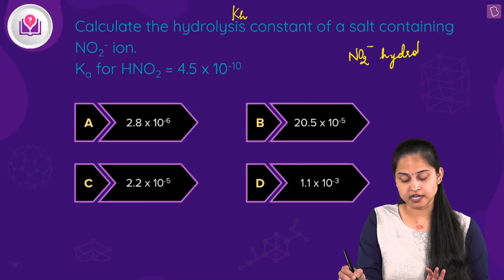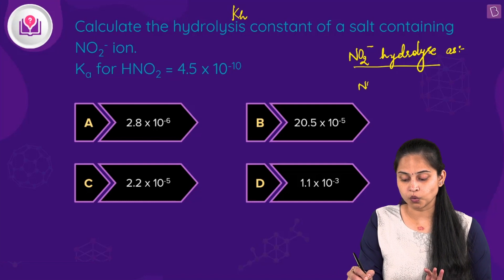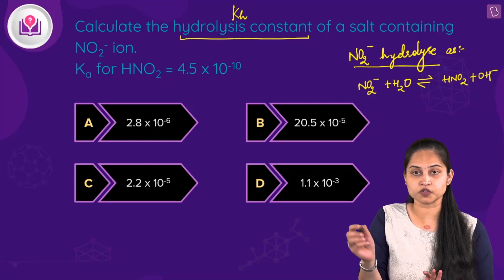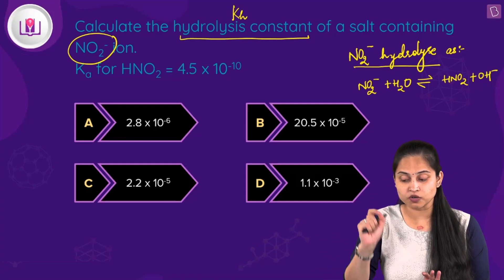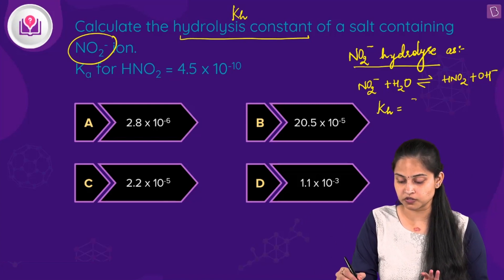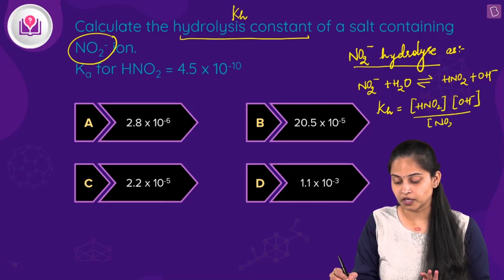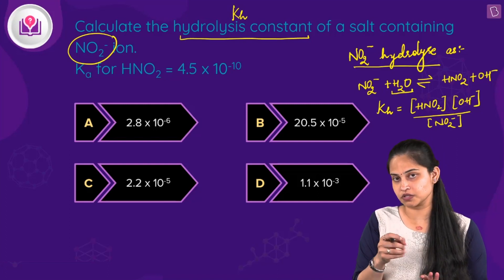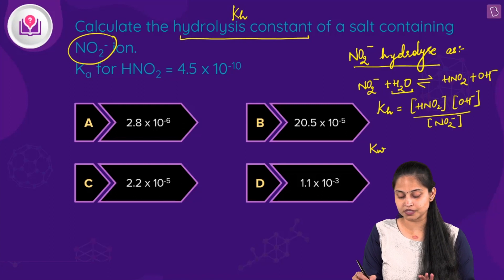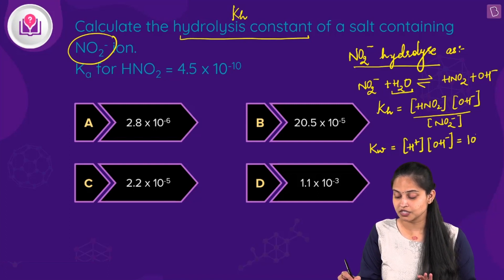Nitrite ion hydrolyzes as: NO₂⁻ + H₂O → HNO₂ + OH⁻. The hydrolysis constant KH equals the product concentrations divided by reactant concentrations, ignoring liquid water. The ionization constant for water Kw equals [H⁺][OH⁻] = 1 × 10⁻¹⁴ at 298 K.